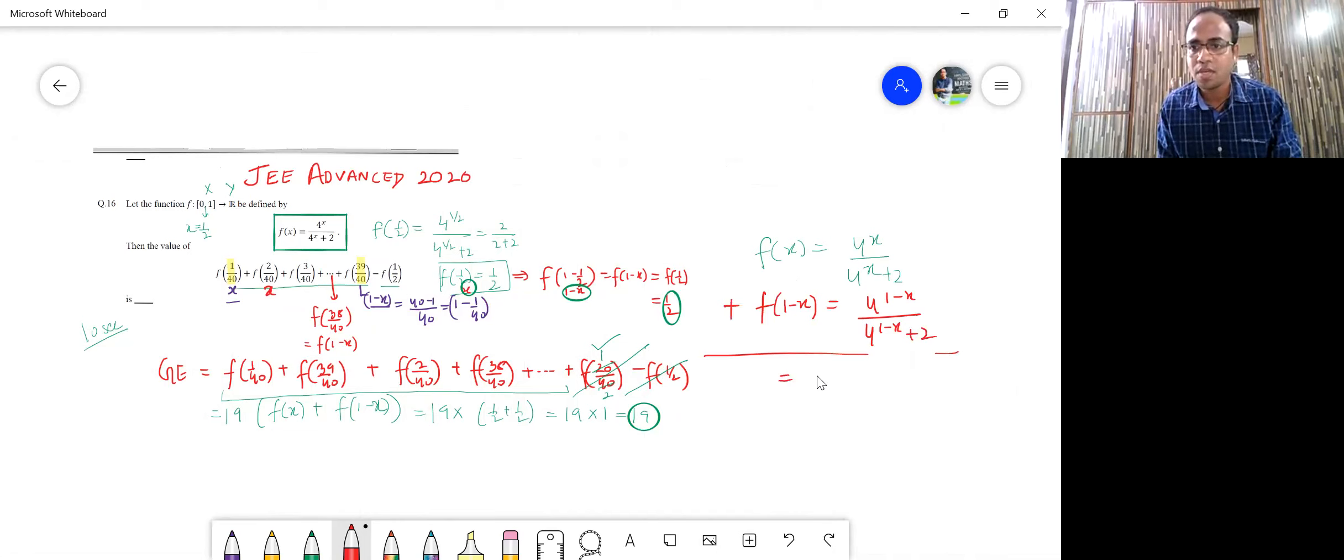So this will be 4 raised to x upon 4 raised to x plus 2. And this will be 4 upon 4 raised to x. The same goes here, 4 upon 4 raised to x plus 2.